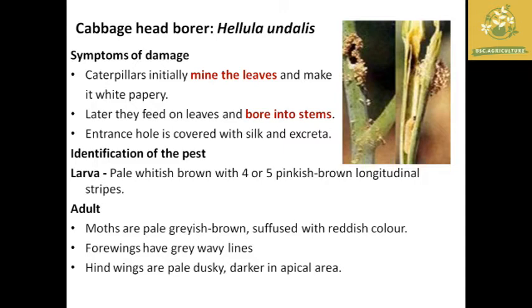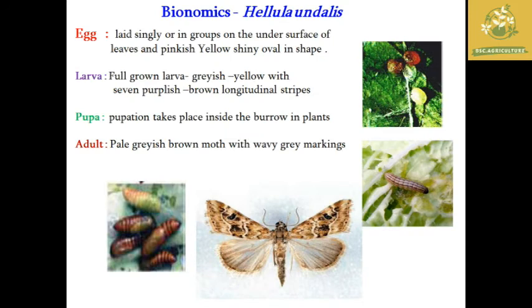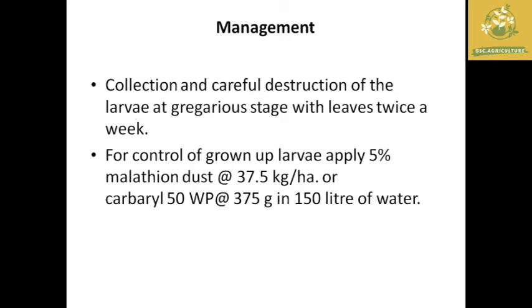The larva of the cabbage head borer is whitish-brown with four to five pinkish-brown longitudinal stripes. The adult moth is pale grayish-brown with reddish patches, gray wavy lines on forewings, and pale dusky hindwings darker in the apical area. Eggs are laid singly or in groups on the underside of leaves — they are pinkish-yellow and shiny. The pupa forms inside the burrowed stem.